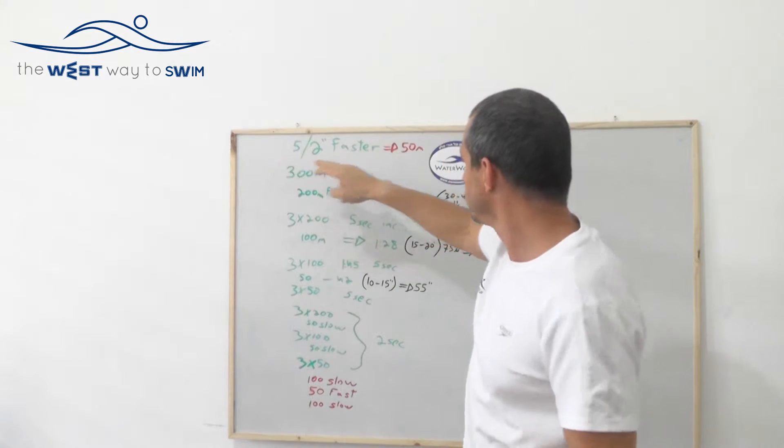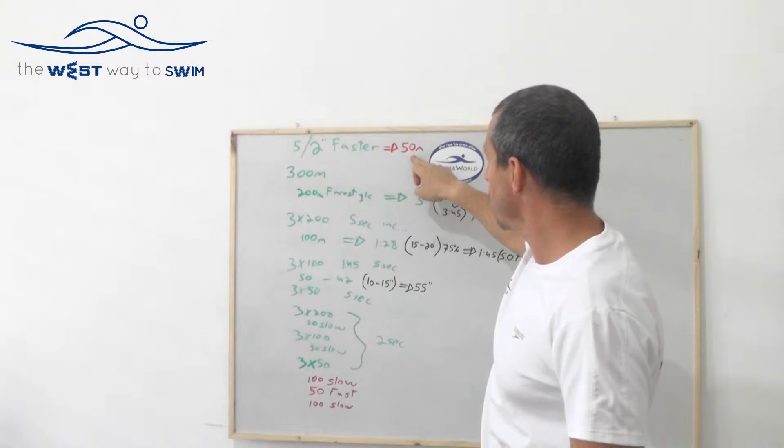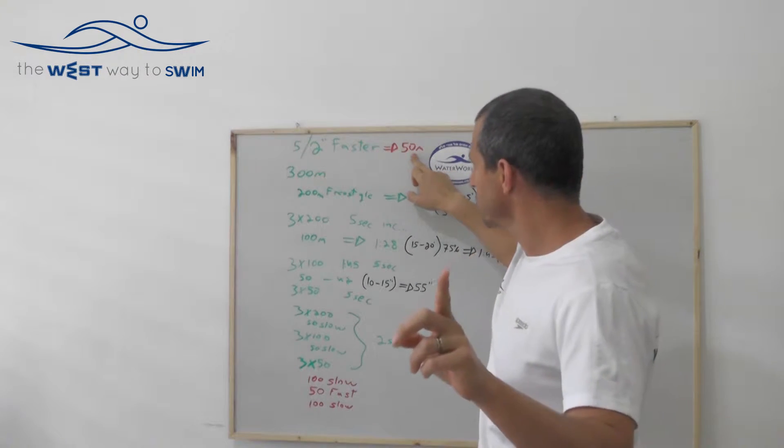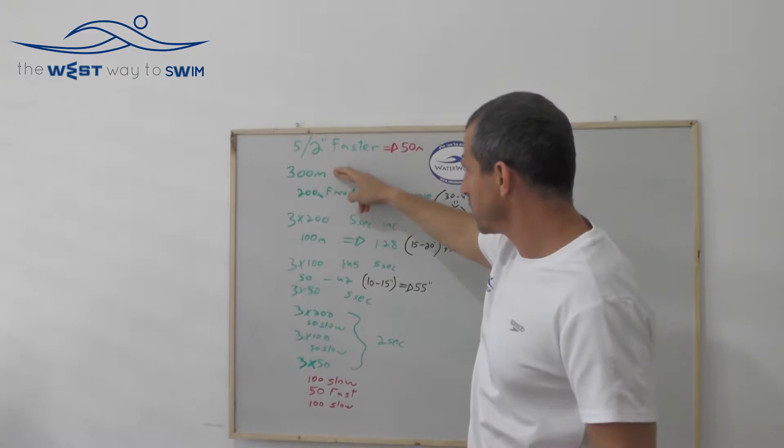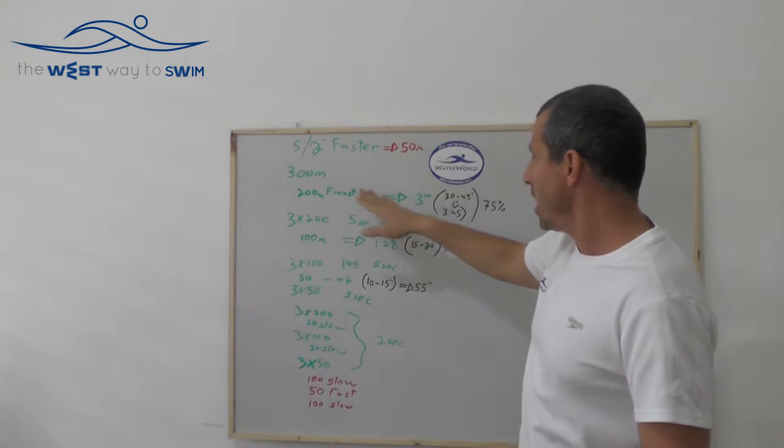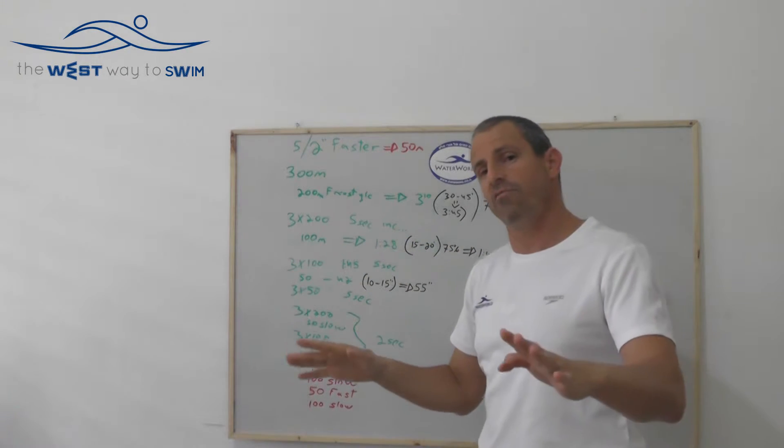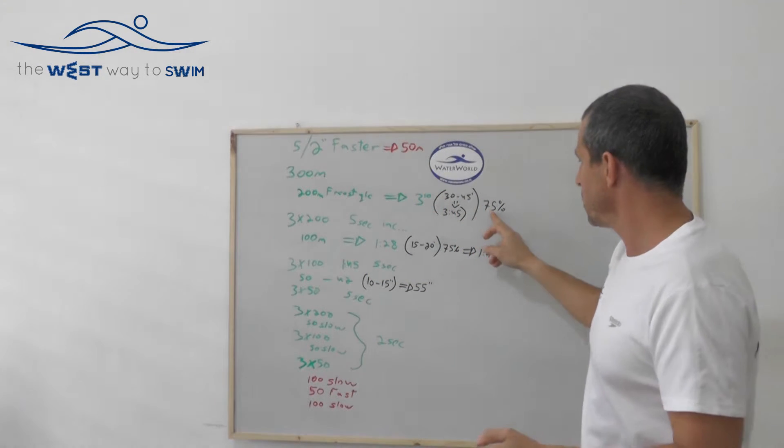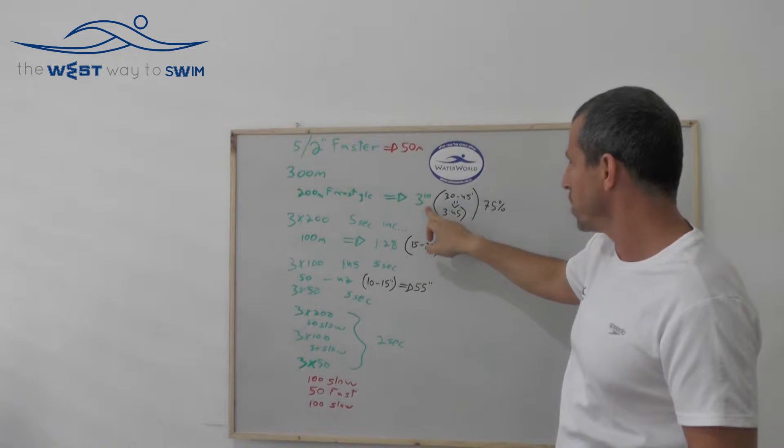At the end you're going to control the pace of a fast 50 meters and count the number of strokes. So warm up 300 meters and then you're going to swim 200 meters freestyle and try to control 75% of your average pace. So let's say the 75% is 3:10 in 200.